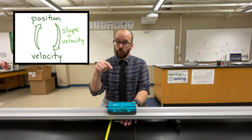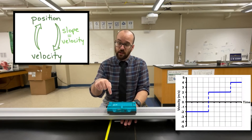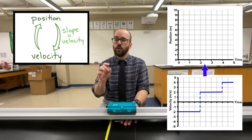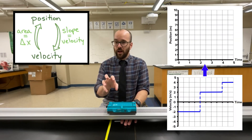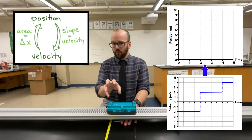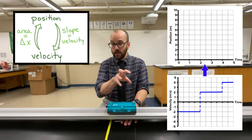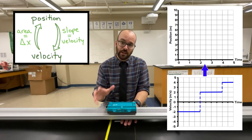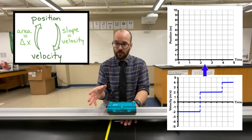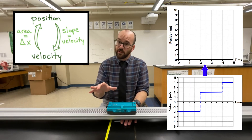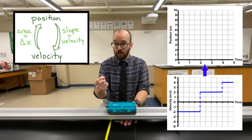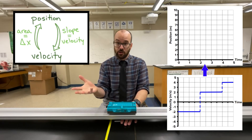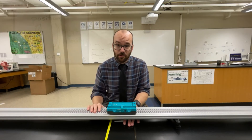To go back the other way — from a velocity graph to a position graph — we can find the area of the velocity graph. The area of the velocity graph in each interval will tell us the displacement during that interval. We can use that displacement information to convert back to the position graph and see what it's going to look like. Let's jump to the whiteboard and get started.